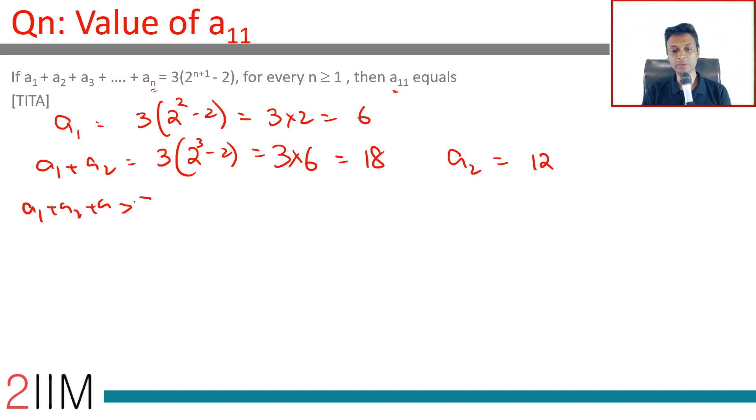S₃ equals a₁ plus a₂ plus a₃, this is 3 times 2 power 4 minus 2, which is 42. a₃ is 42 minus 18. a₁ is 6, a₂ is 12, add these two we get 18, so a₃ is 42 minus 18 which is 24.